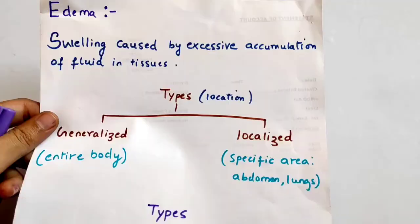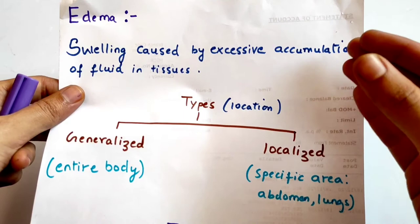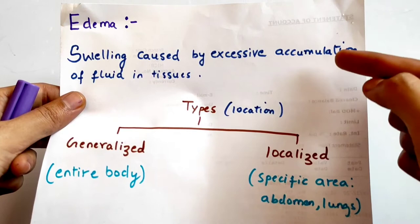Edema is a swelling caused by excessive accumulation of fluid in the tissues. If the fluid in the tissues becomes excessive, then we call it edema. This fluid accumulates in the interstitial space.